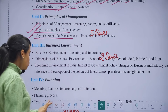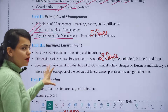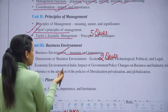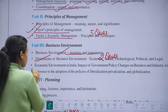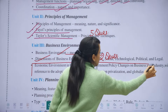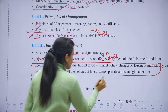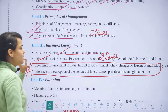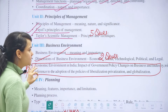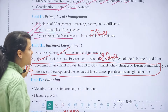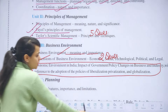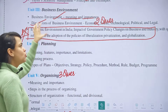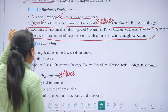In the Business Environment chapter, the meaning and importance of business environment you cover anyway. The dimensions you study as well. But what you do NOT study for boards and will need to cover extra are: the economic environment in India, the impact of government policy changes on business and industry, and the economic reforms — liberalization, privatization, and globalization — which you will find in your NCERT.